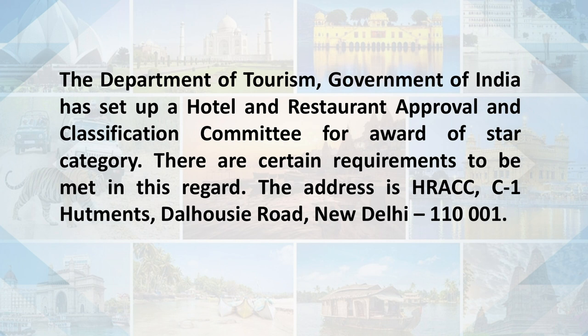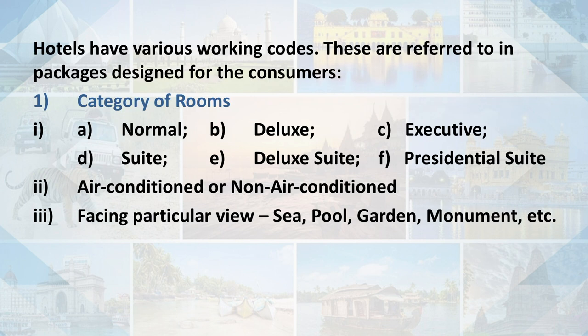Hotels have various working codes referred to in packages designed for consumers. Number one is the category of room, which designates the type of room on offer in a particular package — this may be a normal room, deluxe room, executive room, suite, deluxe suite or residential suite, and should be clearly communicated to the tourist. The room may also be air-conditioned or non-air-conditioned, and may have specific views such as sea facing, pool facing, garden facing or monument facing.